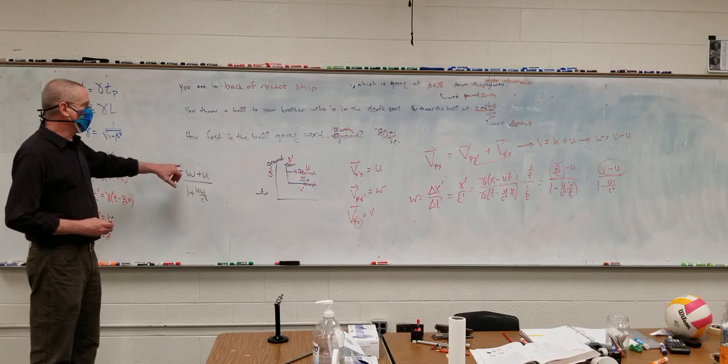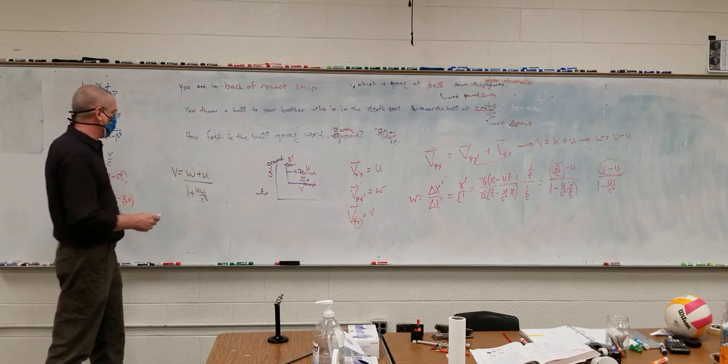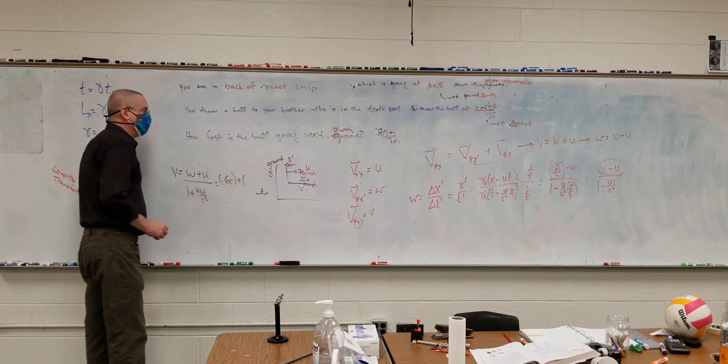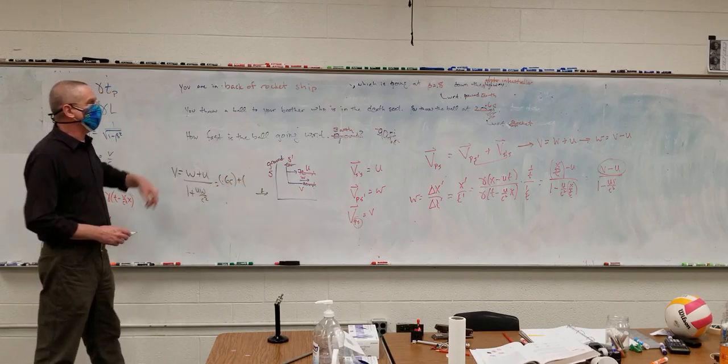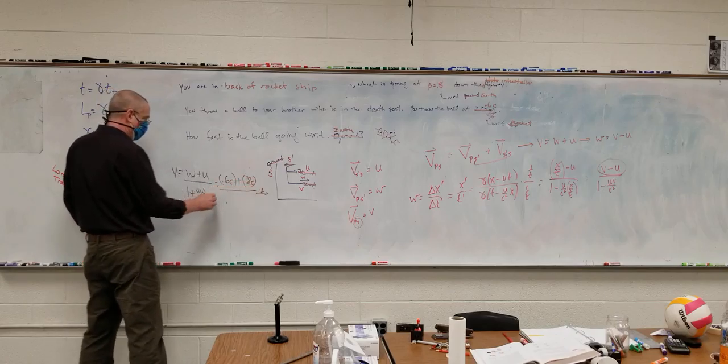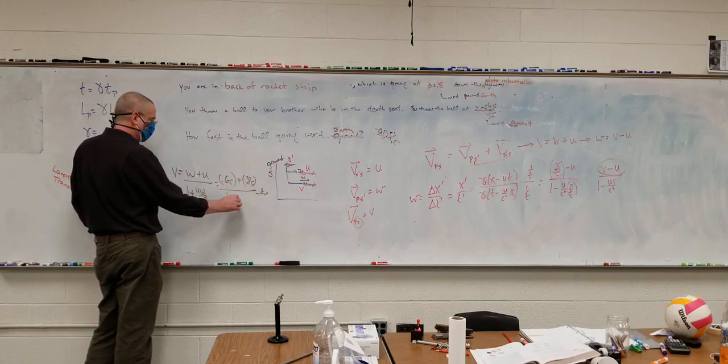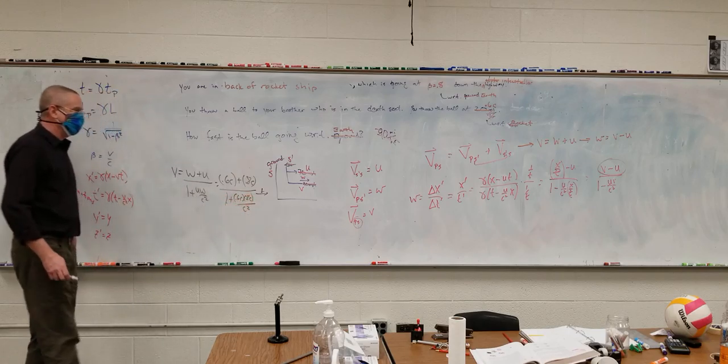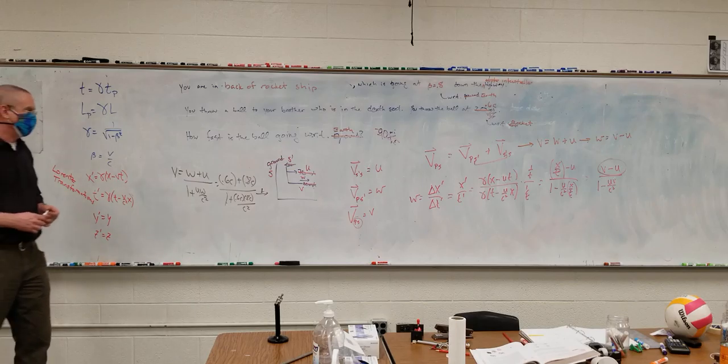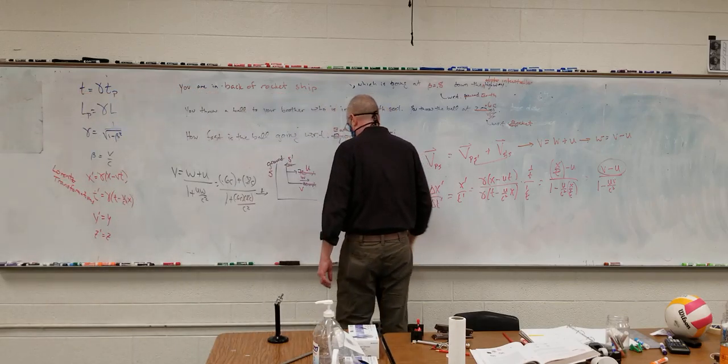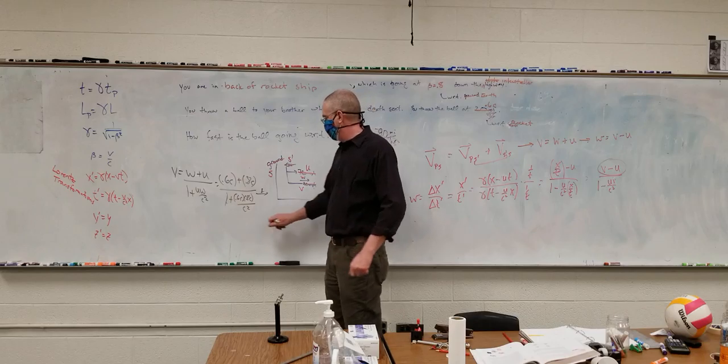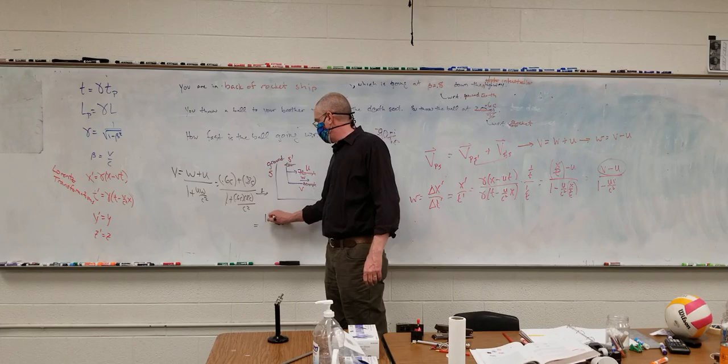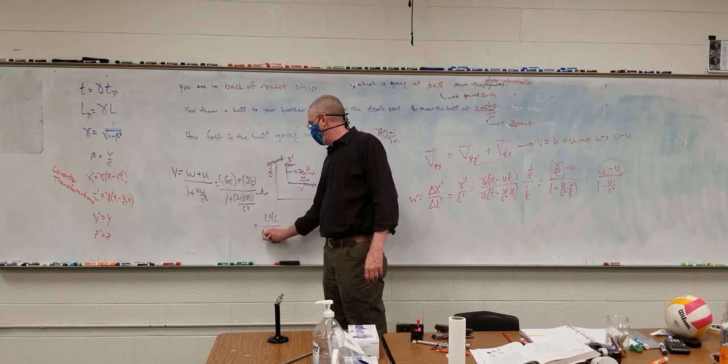And so W was the speed of the ball with respect to the rocket, which is 0.6 times the speed of light. So this is 0.6 C. Plus the speed of the rocket with respect to Earth, which is 0.8 C. Divided by one plus 0.6 C and 0.8 C over C squared. The numerator 1.4 C. The denominator 1.48.